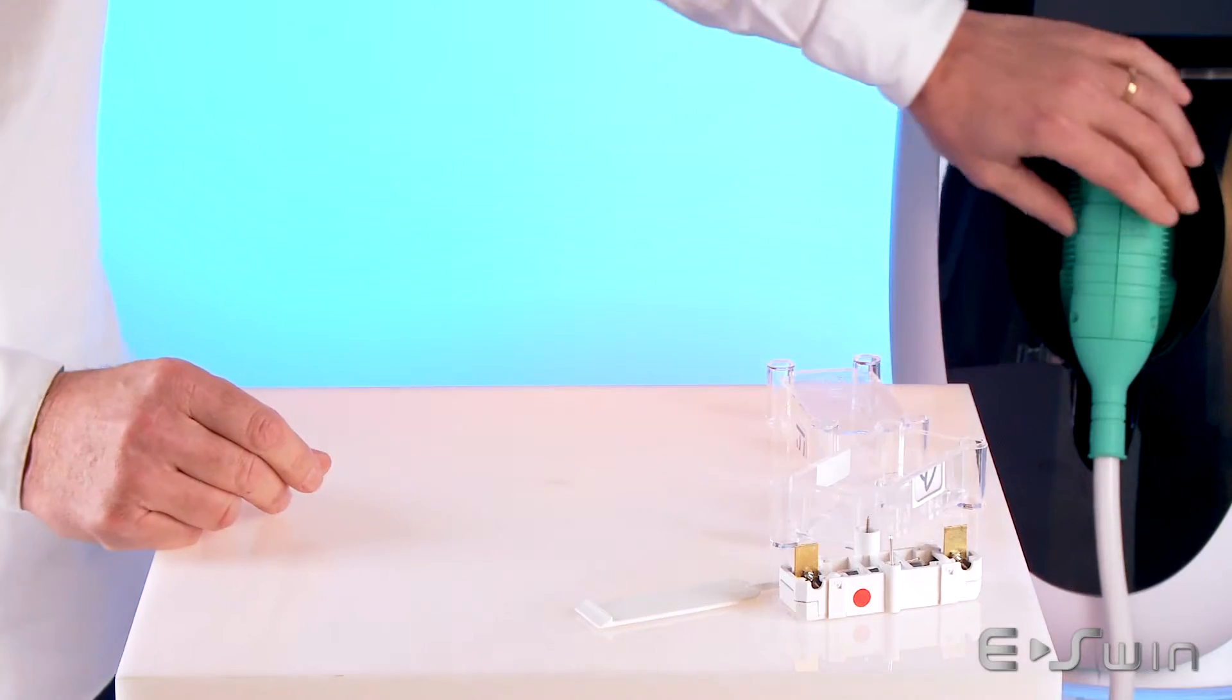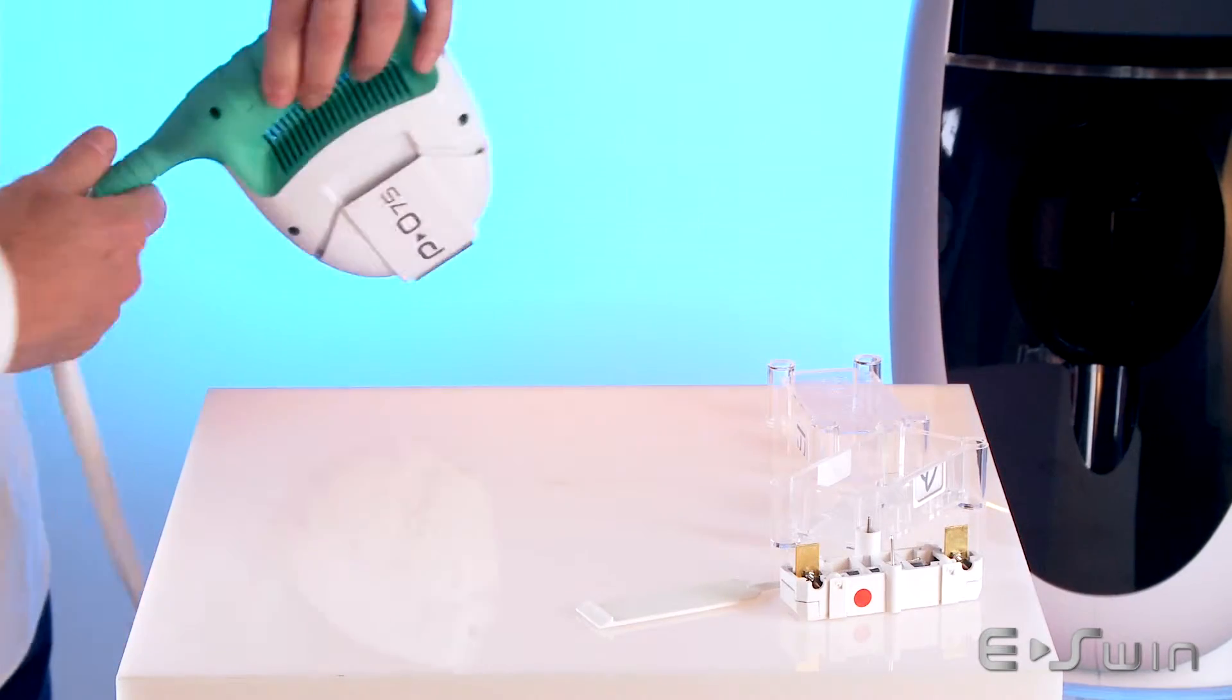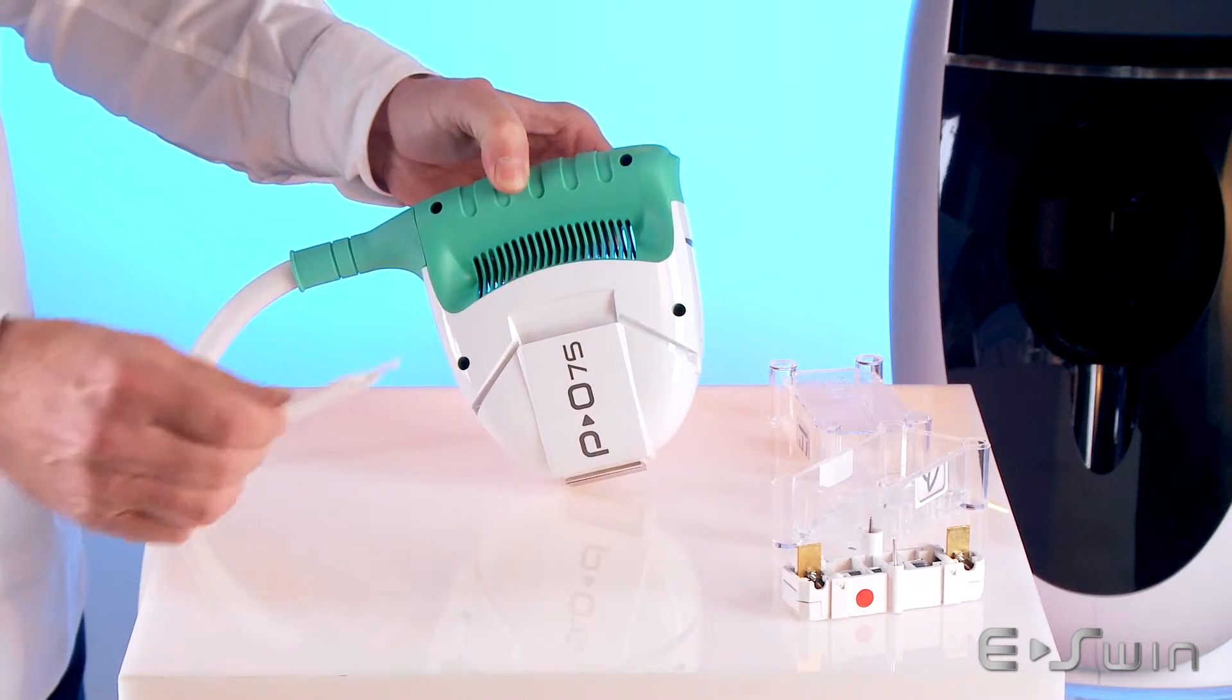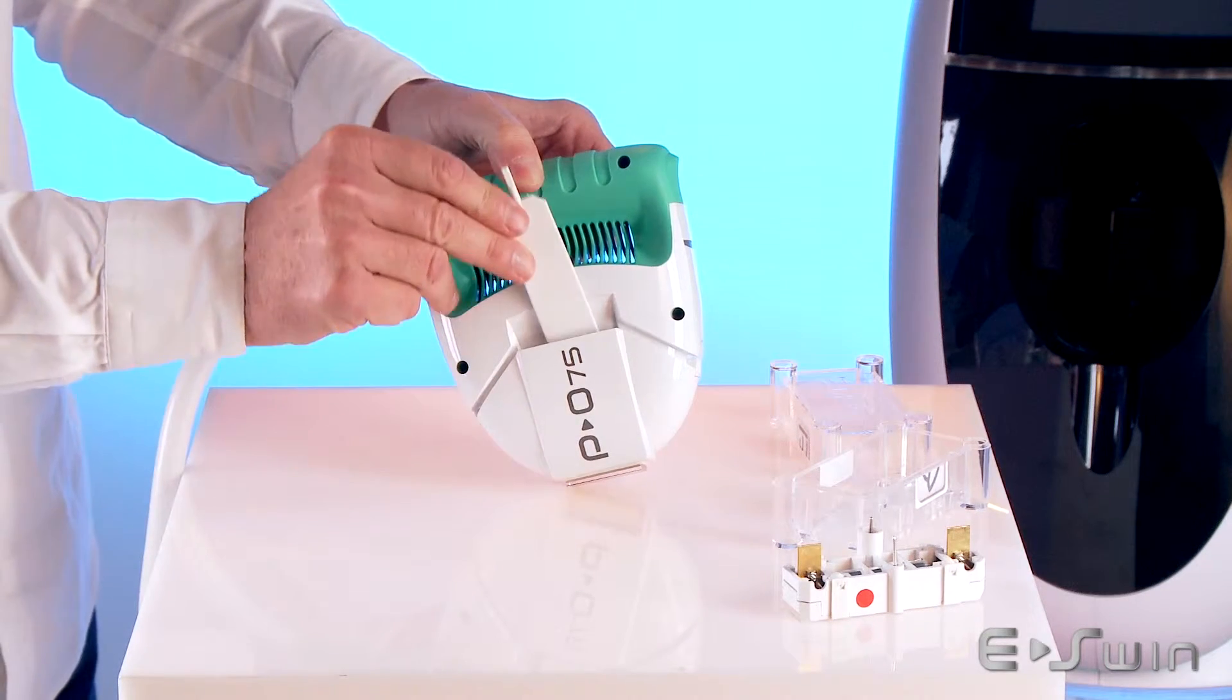Now take the applicator as shown on screen. Push the cartridge extractor all the way into the mobile head.